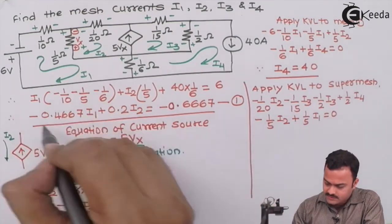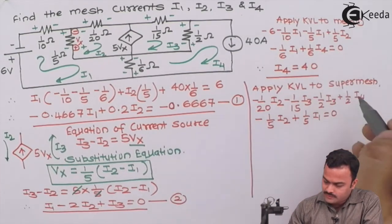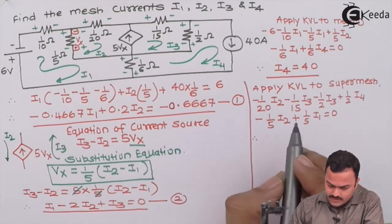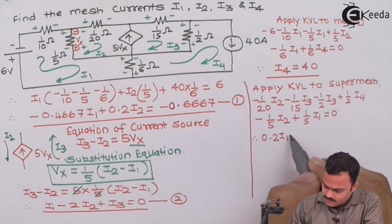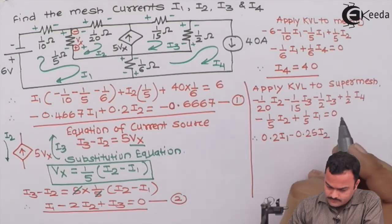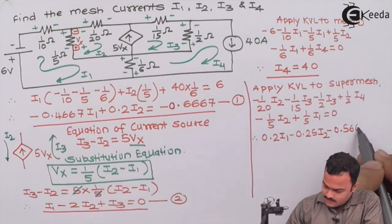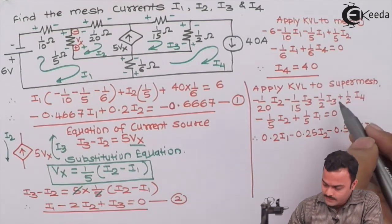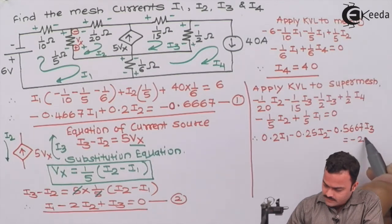The way we have clubbed this i1, i2, i3 over here we can also club them here besides i4. We will put i4 as 40 so 1/2 into 40 is 20. By doing all this modification we will get an equation as 0.2 i1 minus 0.25 i2 minus 0.5667 i3. If I put i4 as 40 I will get 20 on this side. Let's take the 20 to the other side, that becomes minus 20. Equation number 3.